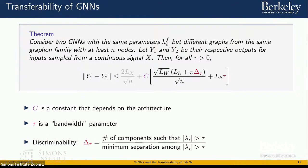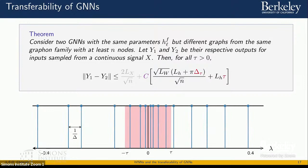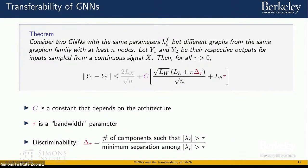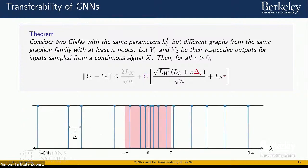The bandwidth parameter tau directly controls the non-transferable term through what we call the non-transferable band, and it also affects the transferable energy through the discriminability parameter — a measure of how separable the spectral features induced by the graph are. We can decrease tau to reduce the non-transferable energy, but potentially at the cost of increasing the transferable energy.